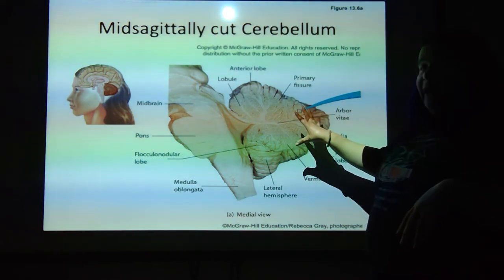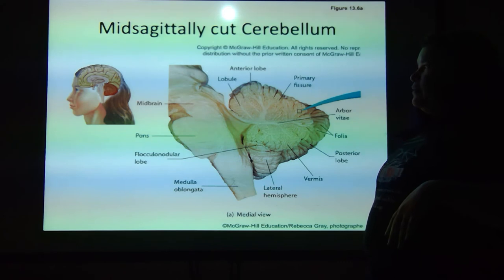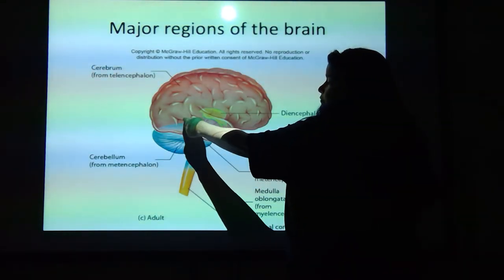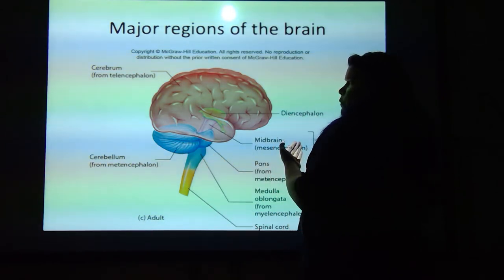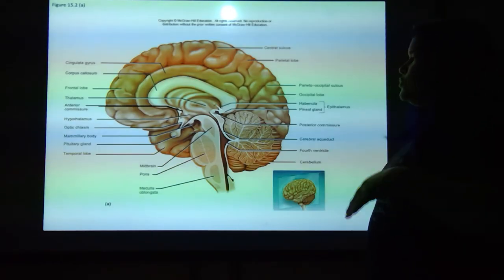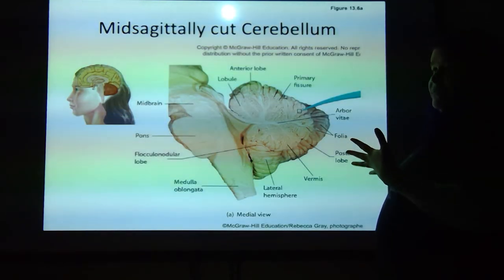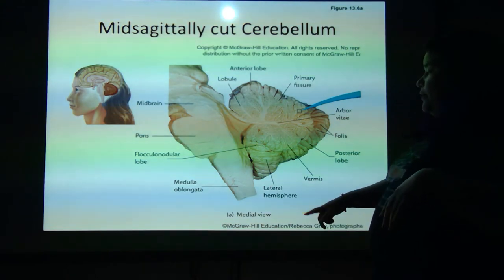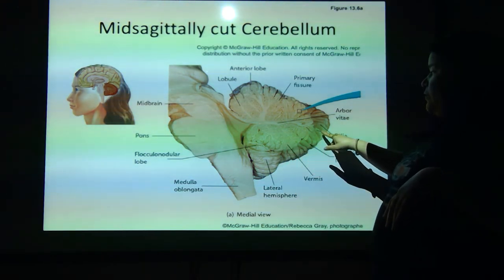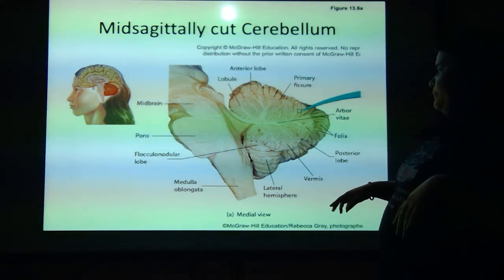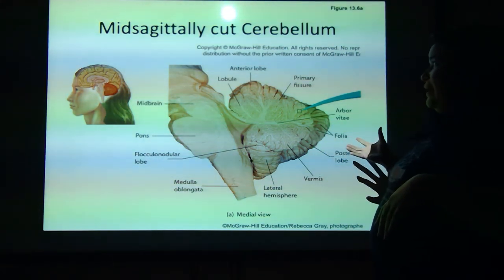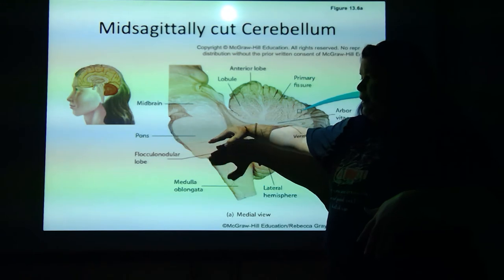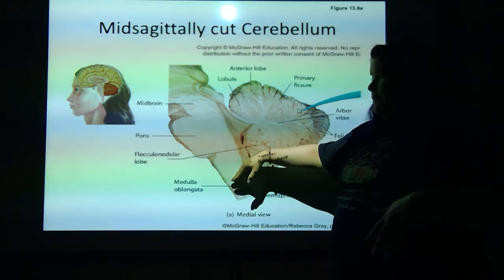This is one lateral hemisphere. You have two of these — one on each side. The vermis are kind of the folds that you see. The folia are the ridges. The posterior lobe is the back. And of course the brainstem — the midbrain, the pons, and the medulla oblongata.